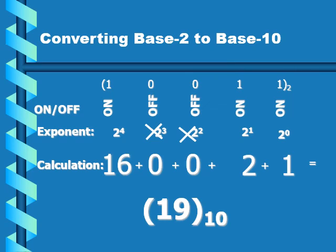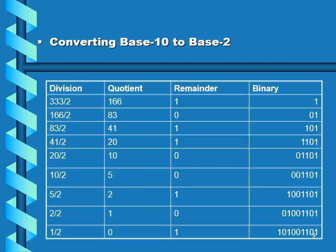Converting base two to base ten: take the binary number, for example 10011, and compute two to the power zero times one, plus two to the power one times one, plus two to the power two times zero, plus two to the power three times zero, plus two to the power four times one. This gives 1 + 2 + 0 + 0 + 16 = 19.